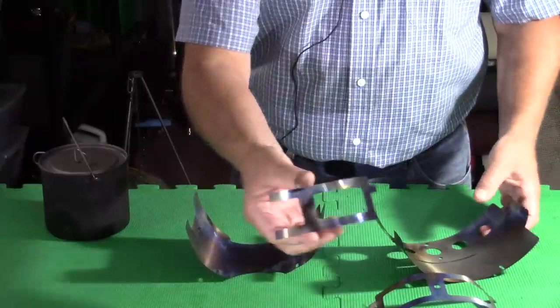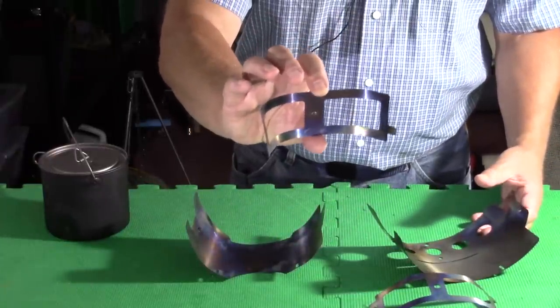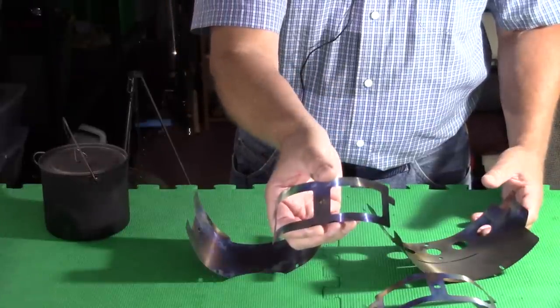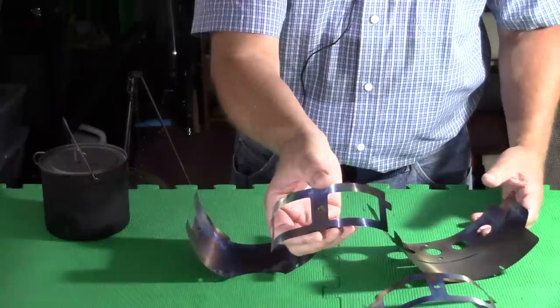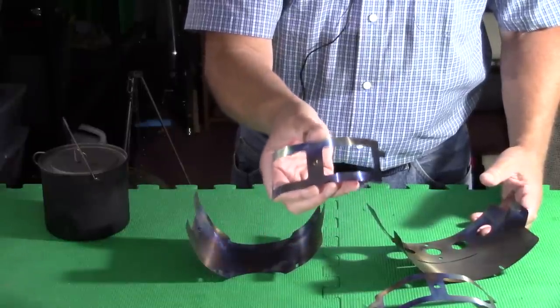You take each of these pot stands and they have two positions: one like this which is the high position, and if you turn it over it drops lower into the stove for use with an alcohol stove. The heights aren't good for that anyway, but in theory it should work better that way.